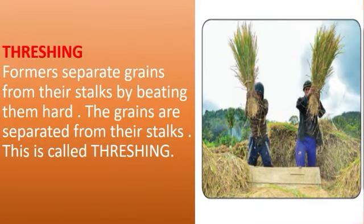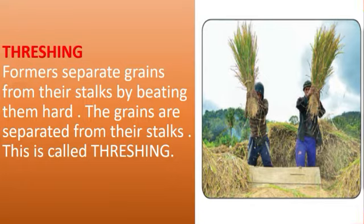Threshing: The grains are small in size and the quantity is very large. Farmers separate grains from their stalks by beating them hard. The grains are separated from their stalks. This is called threshing.